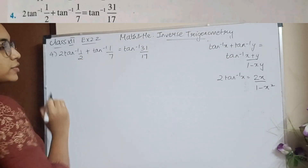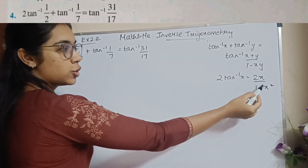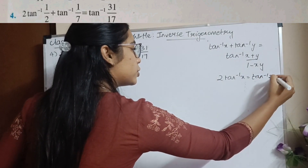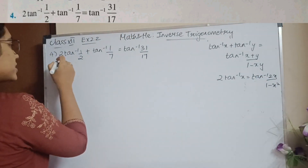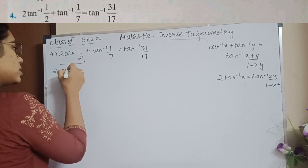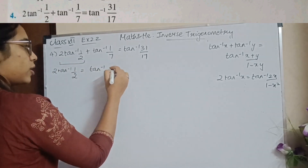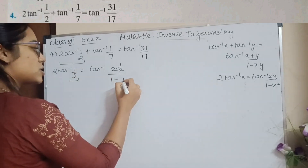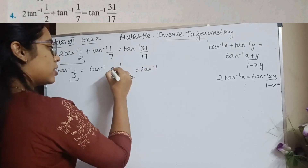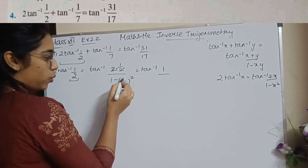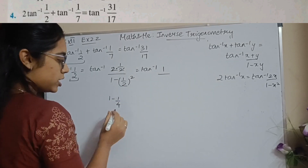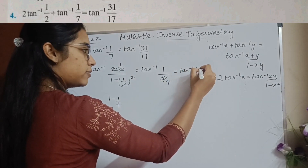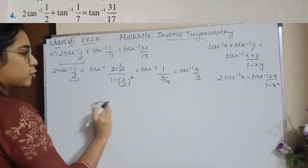Question 4: We have 2tan⁻¹(x). The formula is 2tan⁻¹(x) = tan⁻¹(2x/(1 - x²)). Taking the first term: 2tan⁻¹(1/2) = tan⁻¹(2×(1/2) / (1 - (1/2)²)) = tan⁻¹(1 / (1 - 1/4)) = tan⁻¹(1 / (3/4)) = tan⁻¹(4/3). This is the first term.